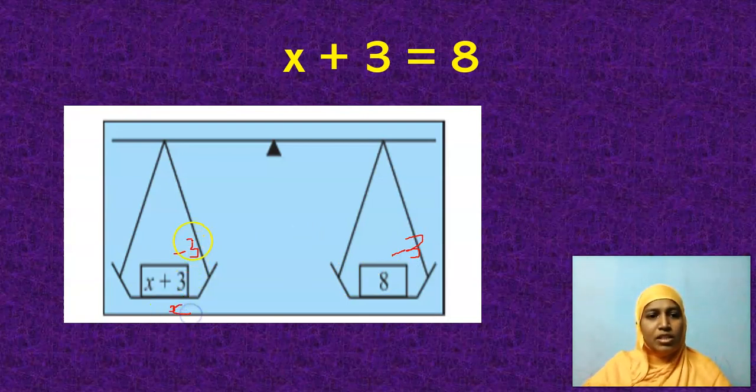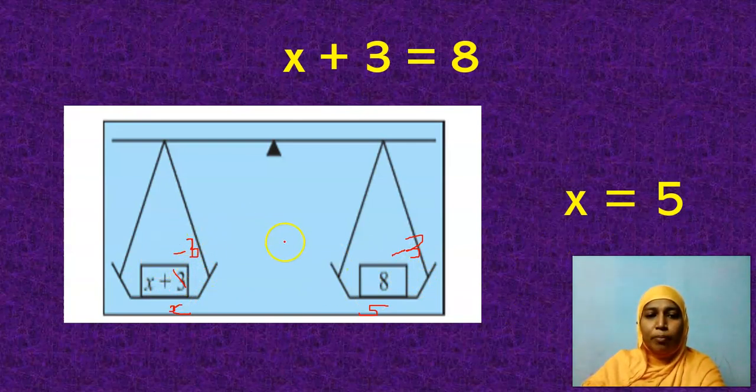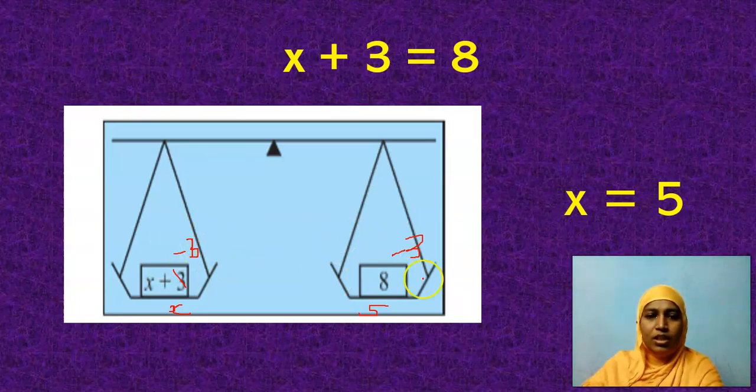Because plus 3 minus 3 will get cancelled. And here, what is 8 minus 3? 5. So what will be our solution? X is equal to 5 is our solution. What have I done? Without changing the balance, I subtracted 3 on both sides.